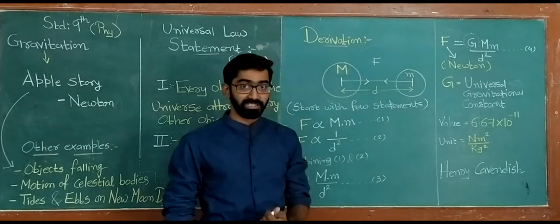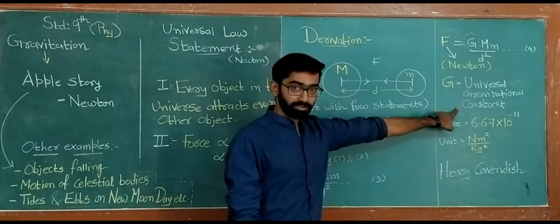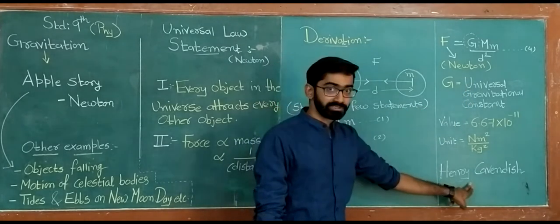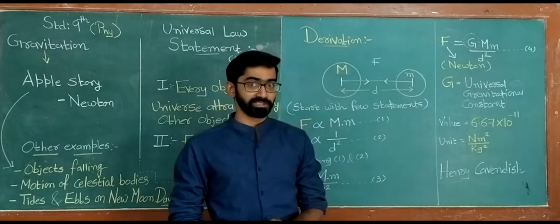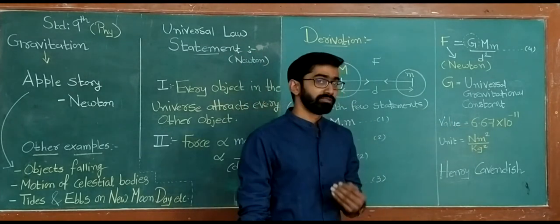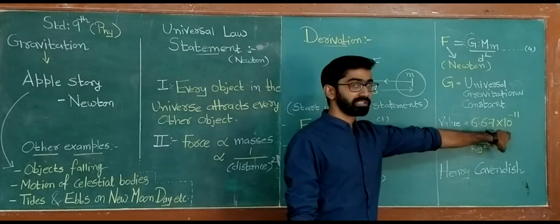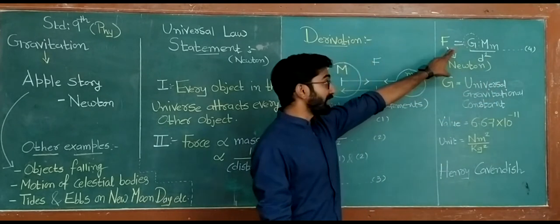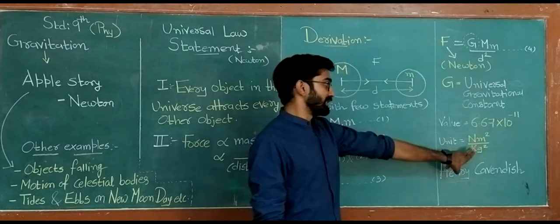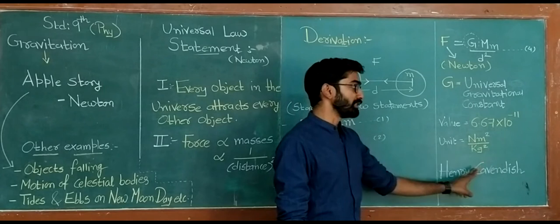Now, what about capital G? Capital G is called universal gravitational constant. Henry Cavendish, a very famous scientist and physicist, has been credited with calculating the value. Its value is 6.67 into 10 to the power minus 11. Based on the final formula, you can also derive the unit of capital G, that is, Newton meter square upon kg square.